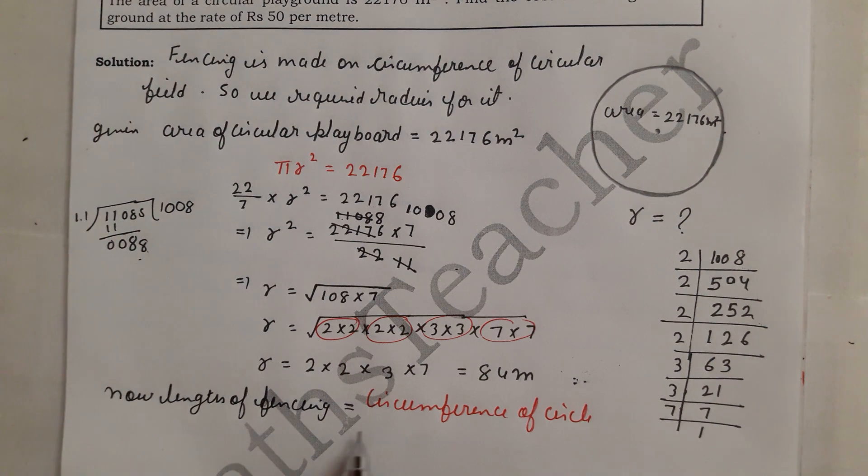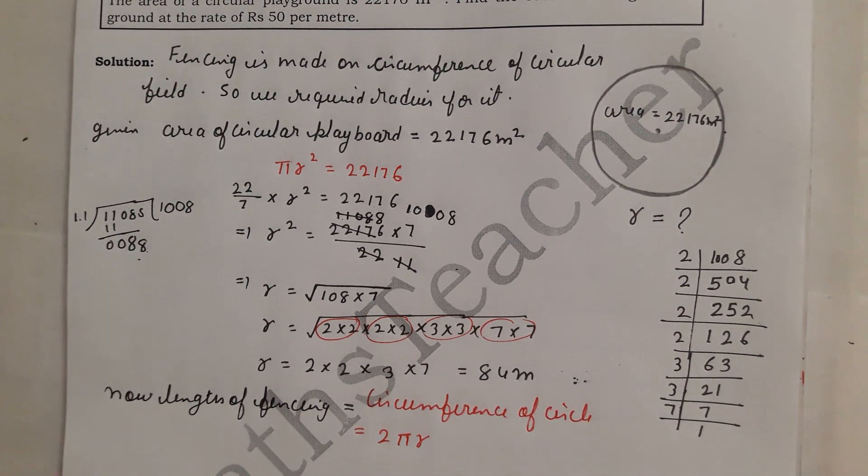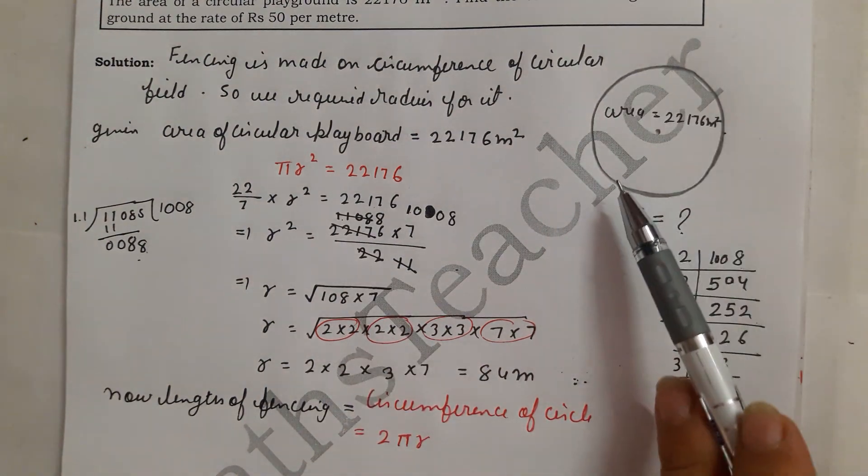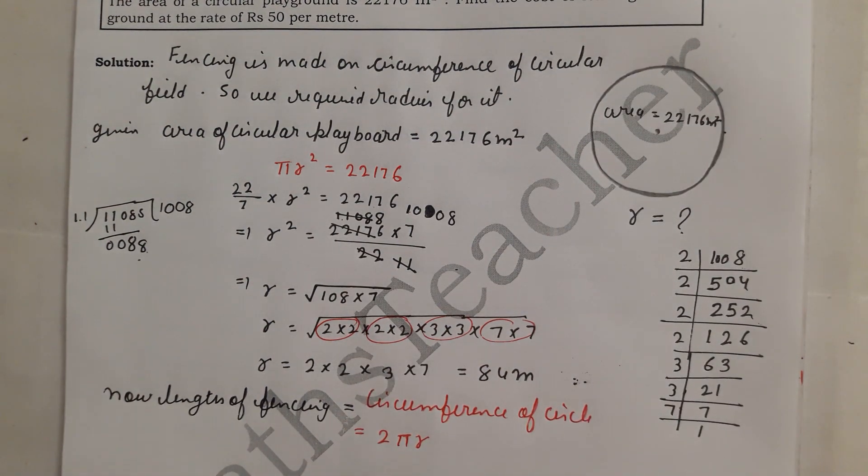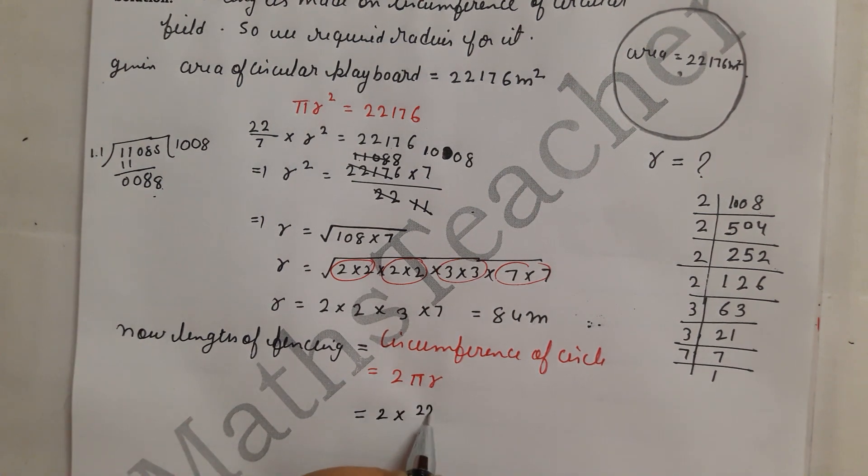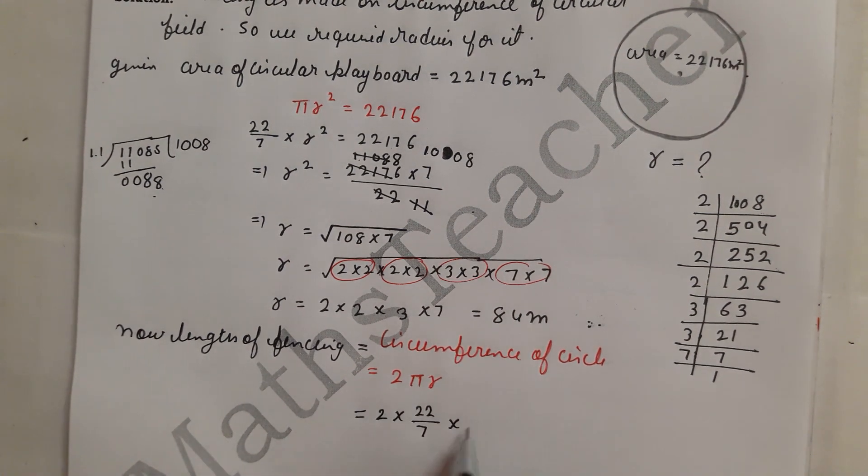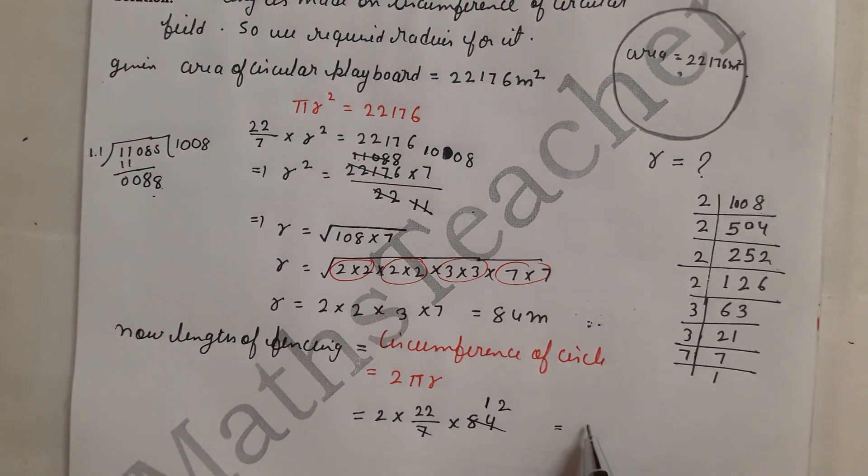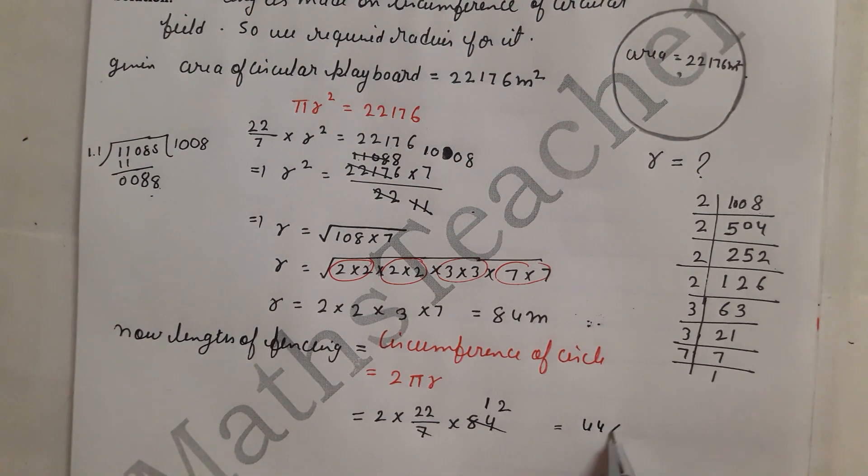The formula for circumference of circle is 2 pi r. There are two formulas in circle - one, area is pi r square, and the perimeter or circumference formula is 2 pi r. Put the values: 2 as it is, pi is 22 by 7, r is 84. In this, 84 cancels with 7 to give 12, so it is 2 times 22 times 12. 22 into 2 is 44, 44 into 12 is 528 meters.